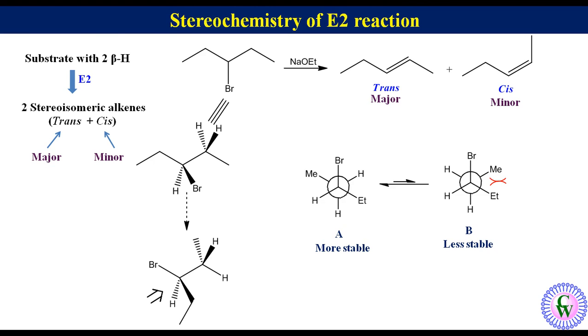Conformation B is less stable than conformation A because of gauche interaction in B. Now, we can see that elimination in more stable conformation A gives major trans isomer while elimination in less stable conformation B gives minor cis isomer.